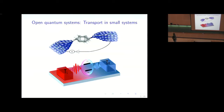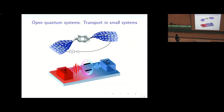Another system is called the non-equilibrium spin-boson model. You have an atom in a cavity interacting with a radiation field or some bosonic field, and it's possible to arrange it so that it's connected to two fields at different temperatures. Then you want to know how heat transfers across this system.